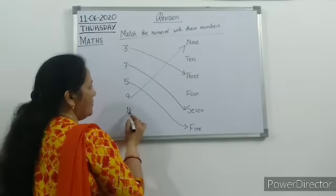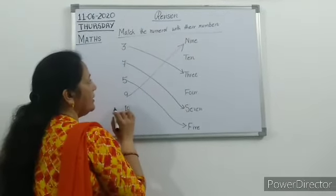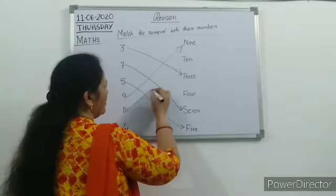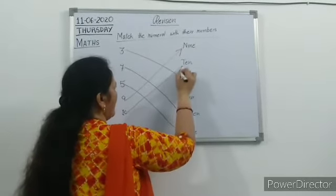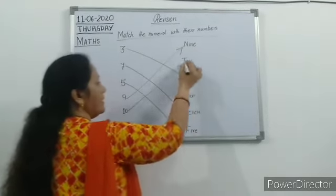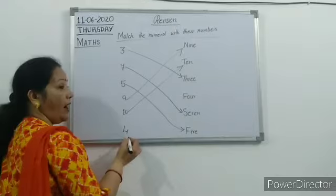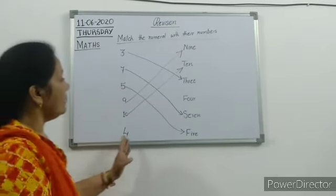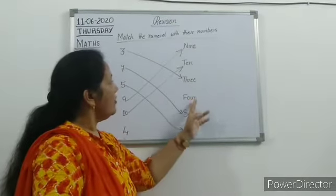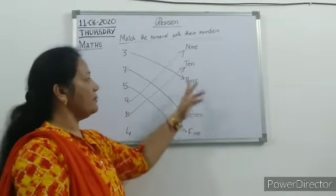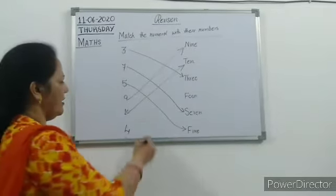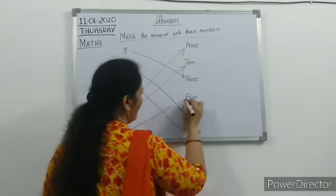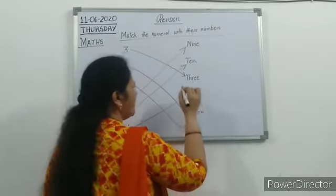And next numeral is 10. Where is 10? 9, after 10 is given. So you can match T-E-N 10. And last numeral is 4. Where is 4? 4, 4 — very good. F-O-U-R 4, okay.